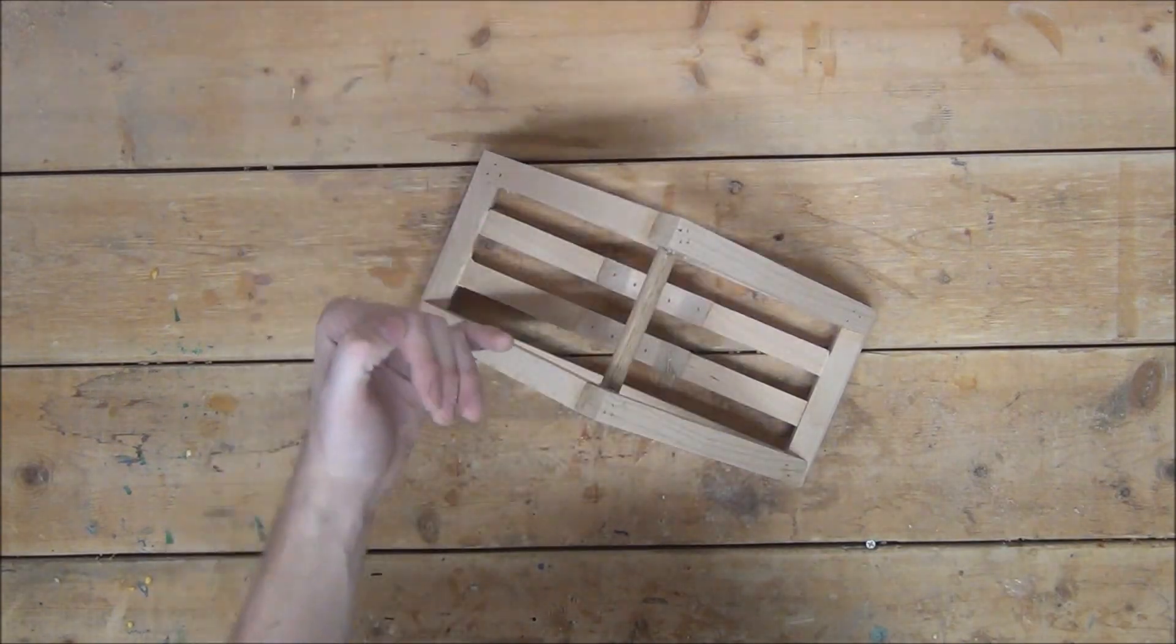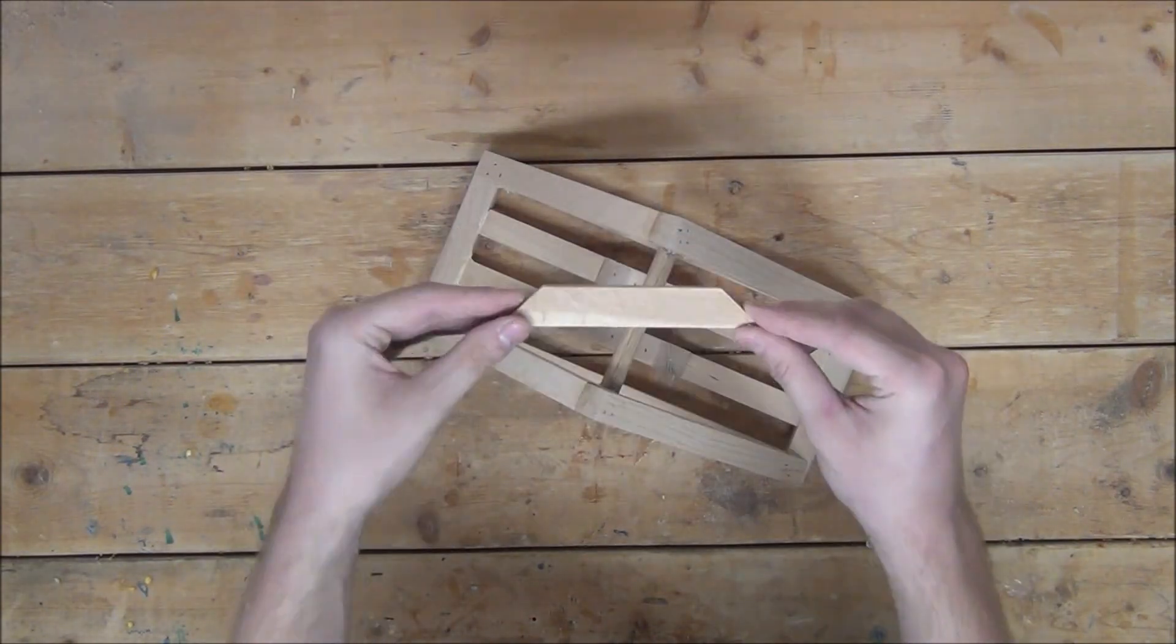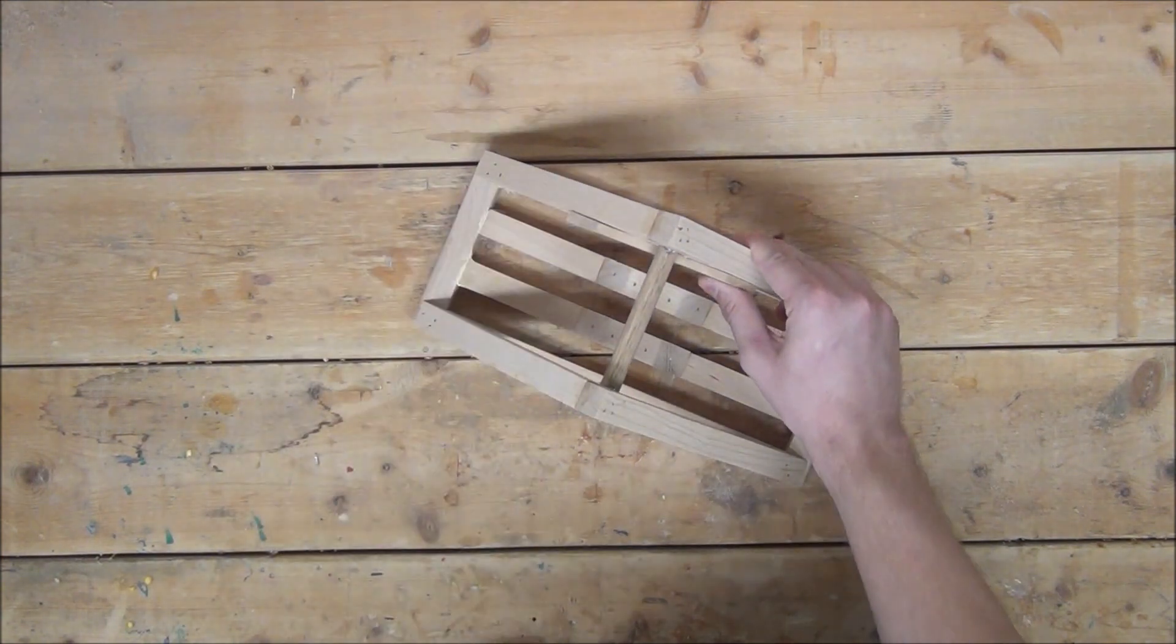Now, although it is not entirely necessary, I'm going to add a quarter inch thick piece of oak wood beneath the dowel on both sides to help hold it in place.